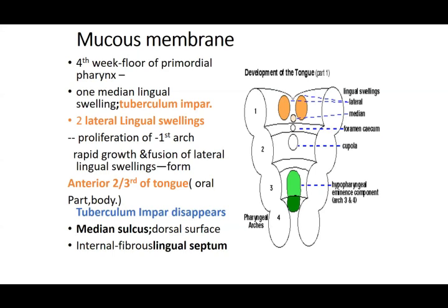Where the two lateral lingual swellings fuse together, a median sulcus forms, visible on the dorsal surface of the tongue. Between the two halves is the internal fibrous lingual septum — a median partition separating the two lateral components. This is the formation of the anterior two-thirds from the first arch, getting its nerve supply from the first arch nerve.